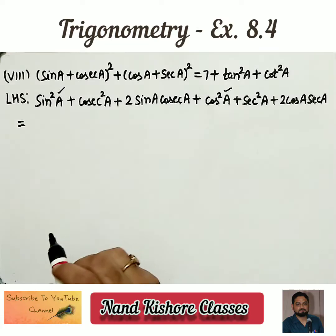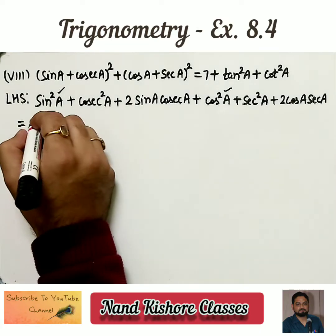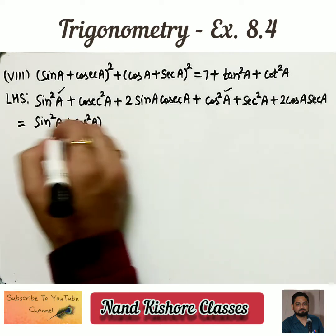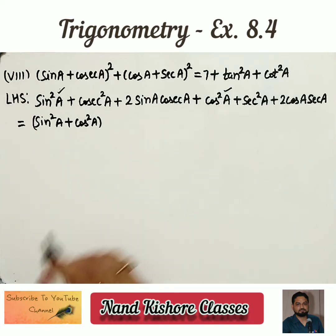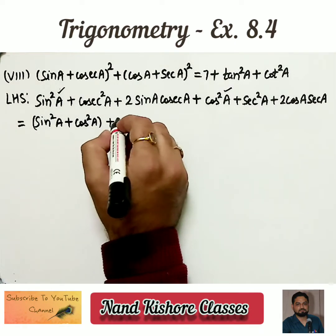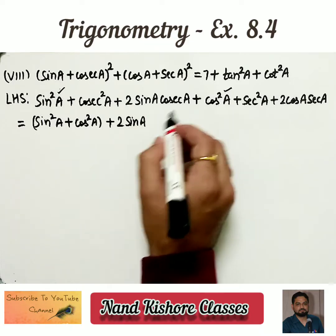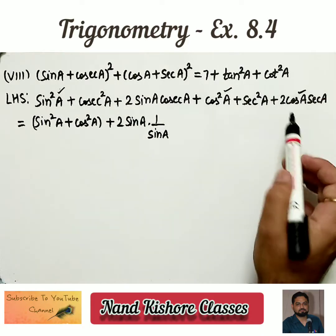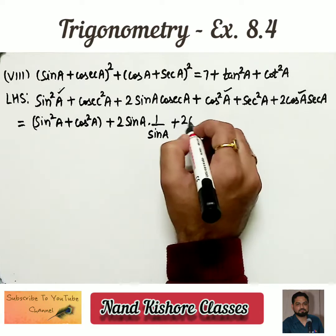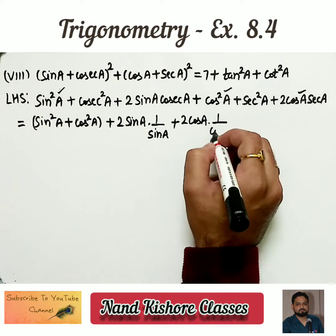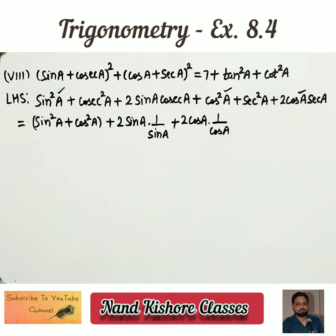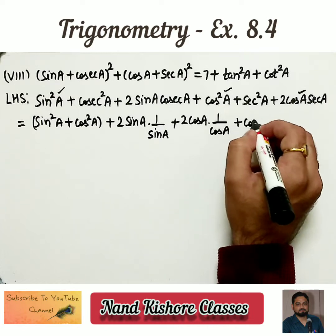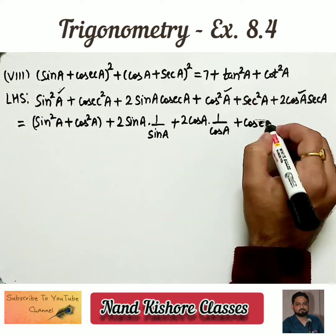Now, sin square a and cos square a together equal 1, so I am writing them together to use the formula. Then 2 sin a times cosecant a: cosecant a is 1 by sin a, so these cancel giving 2. Then 2 cos a times secant a: secant a is 1 by cos a, so these cancel giving 2. We are left with cosecant square a and secant square a.